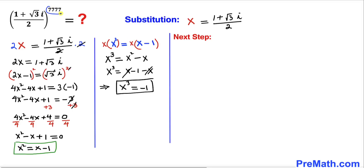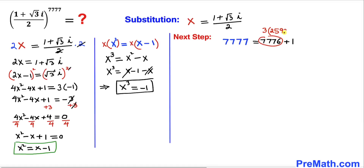Since we're dealing with the exponent 7777, let's rewrite it. We can write 7777 = 7776 + 1, and 7776 = 3 × 2592. Therefore 7777 = 3 × 2592 + 1.